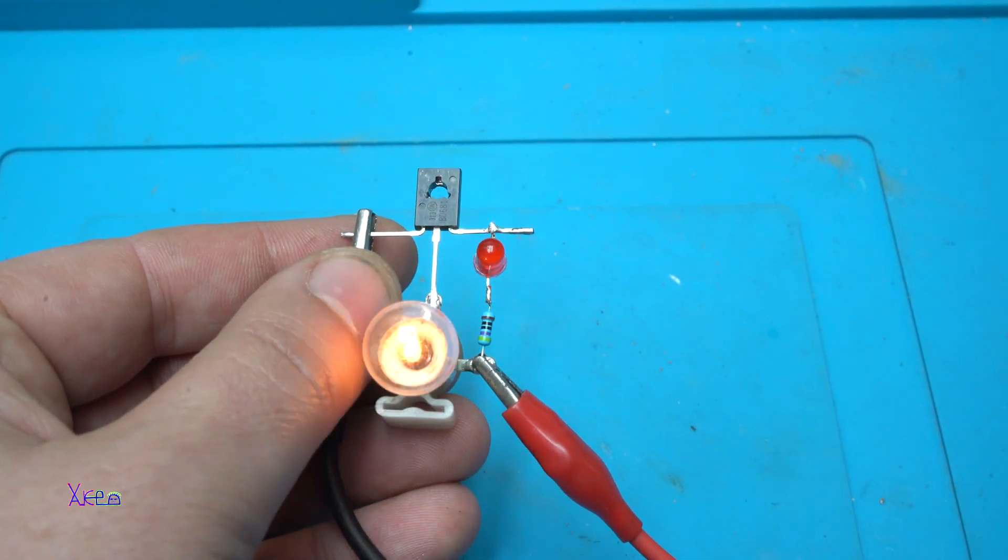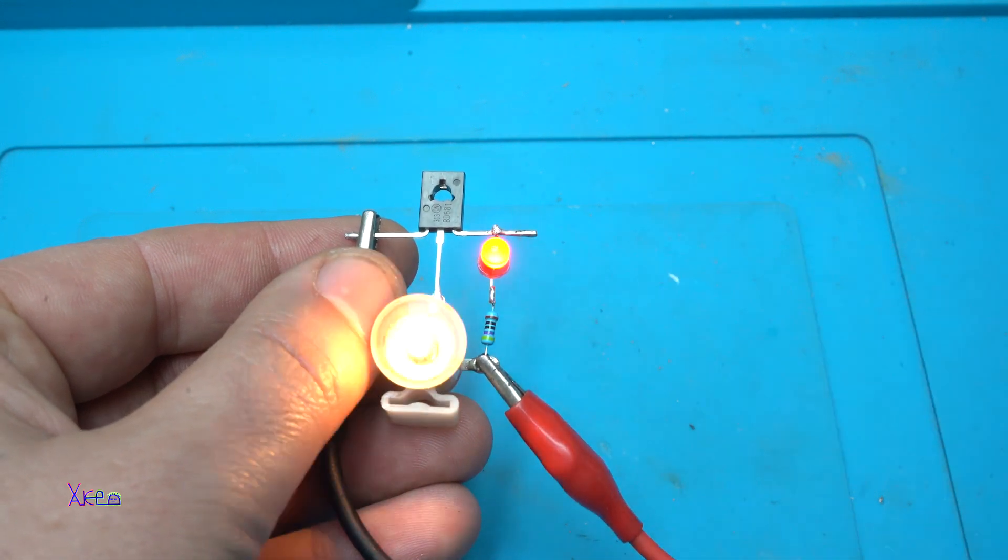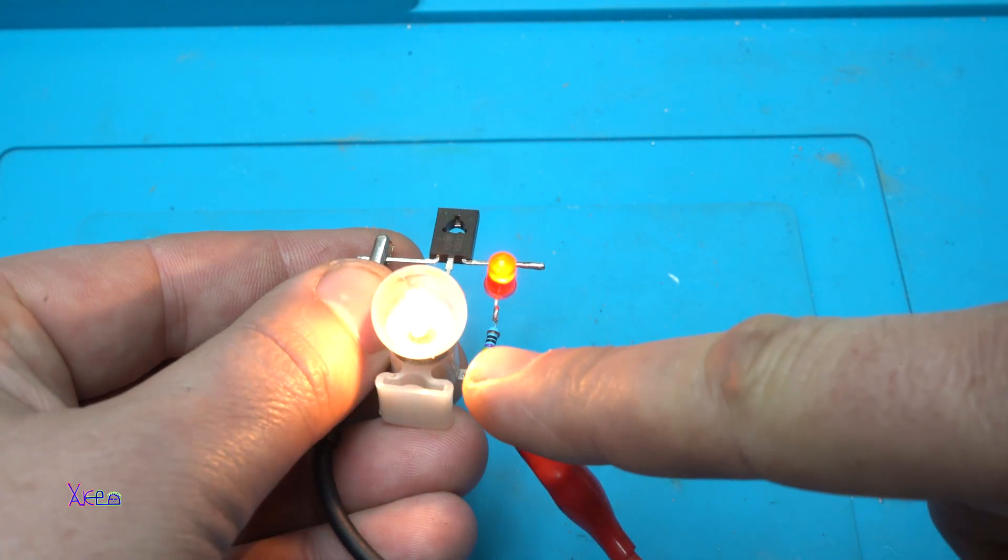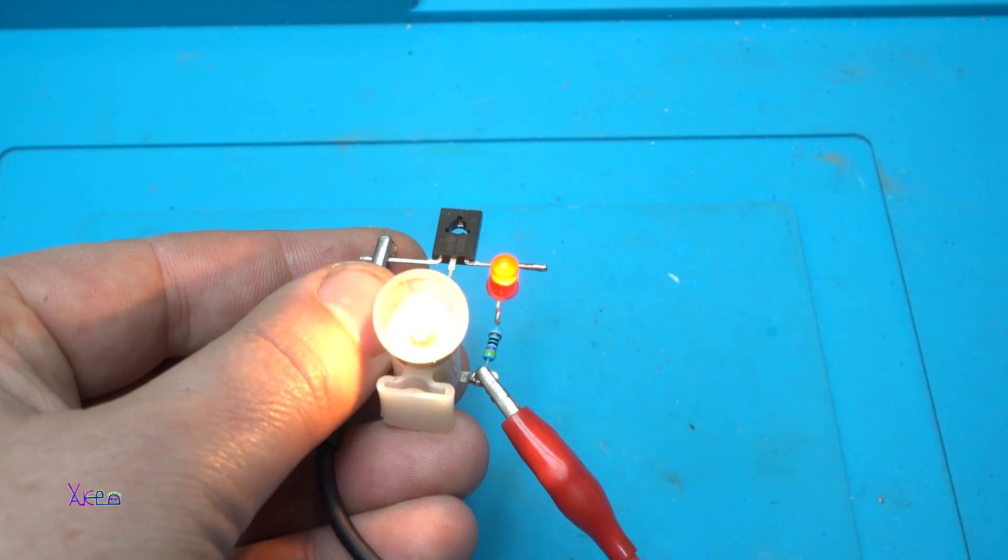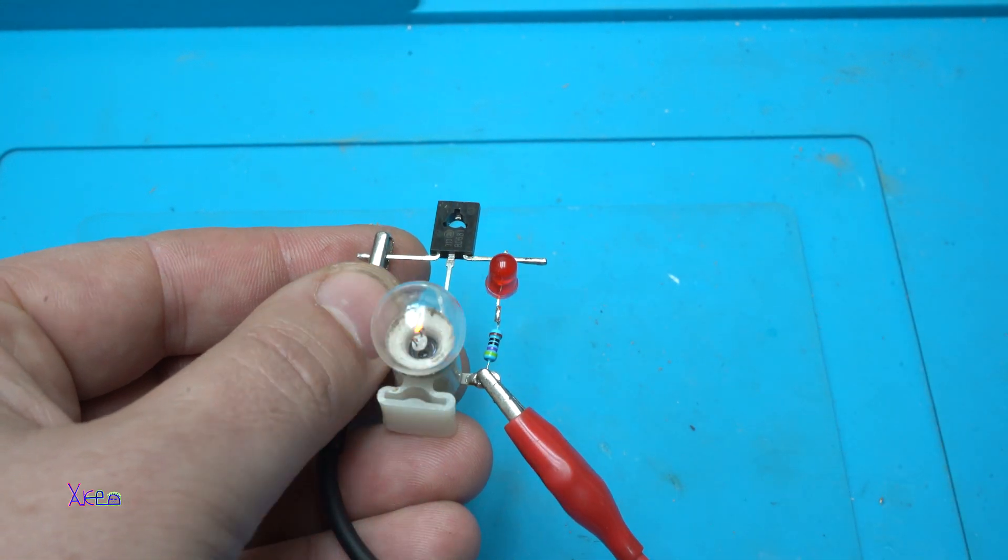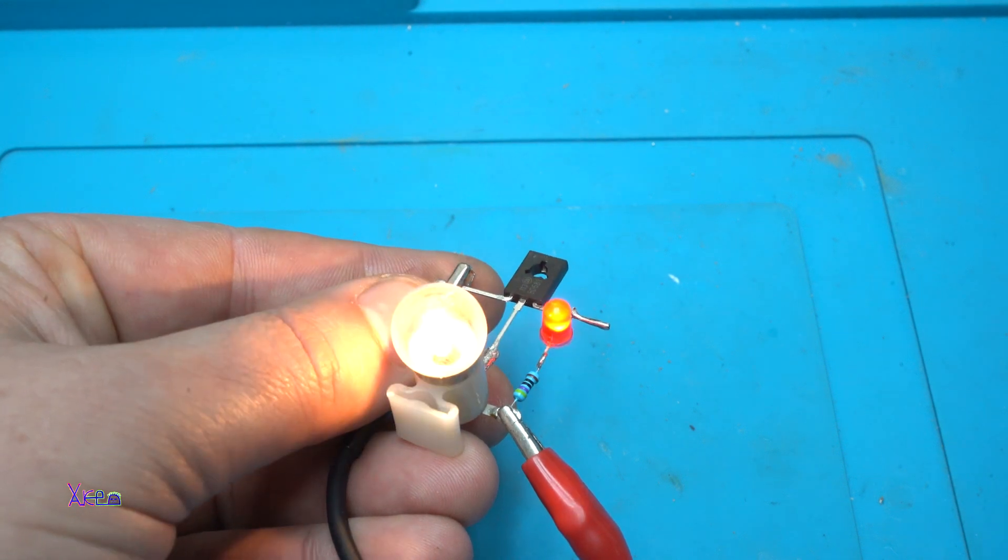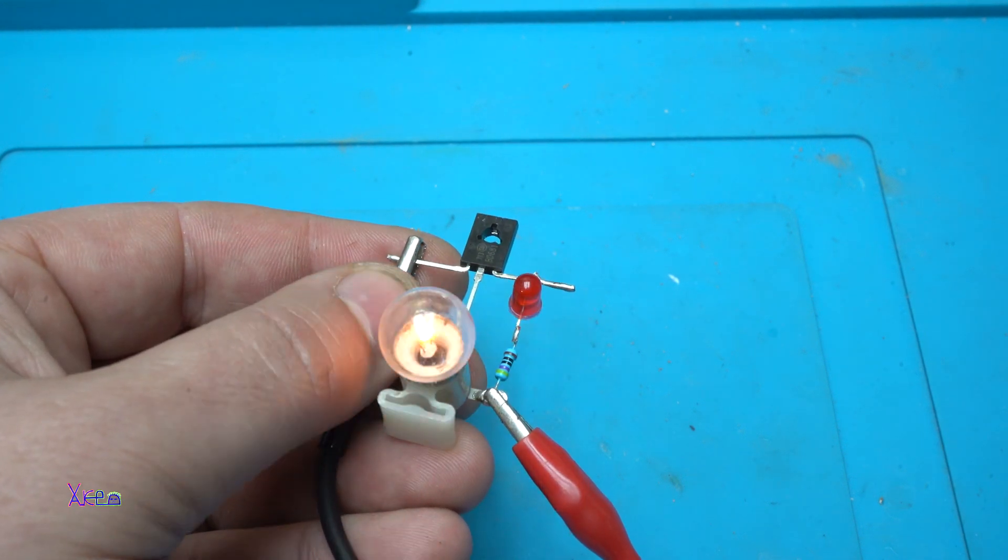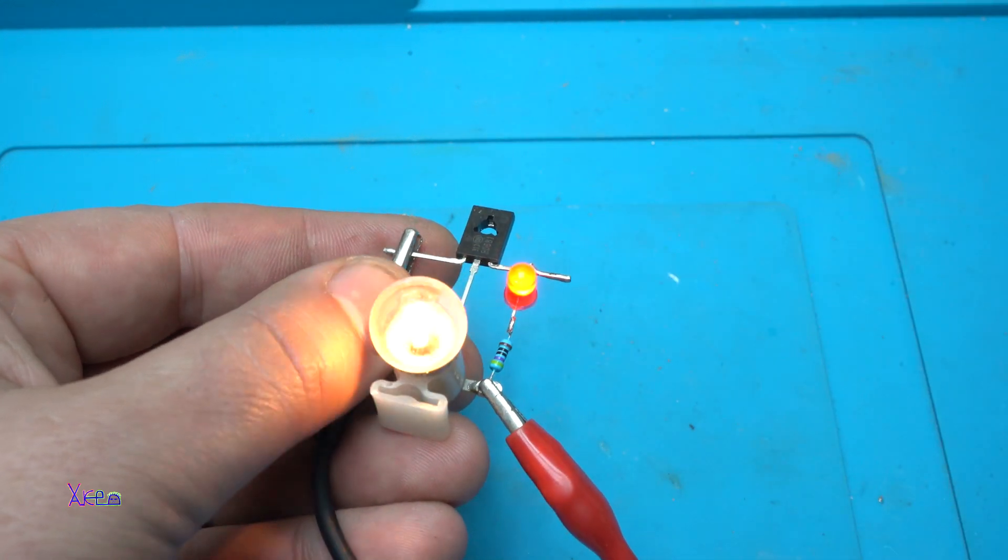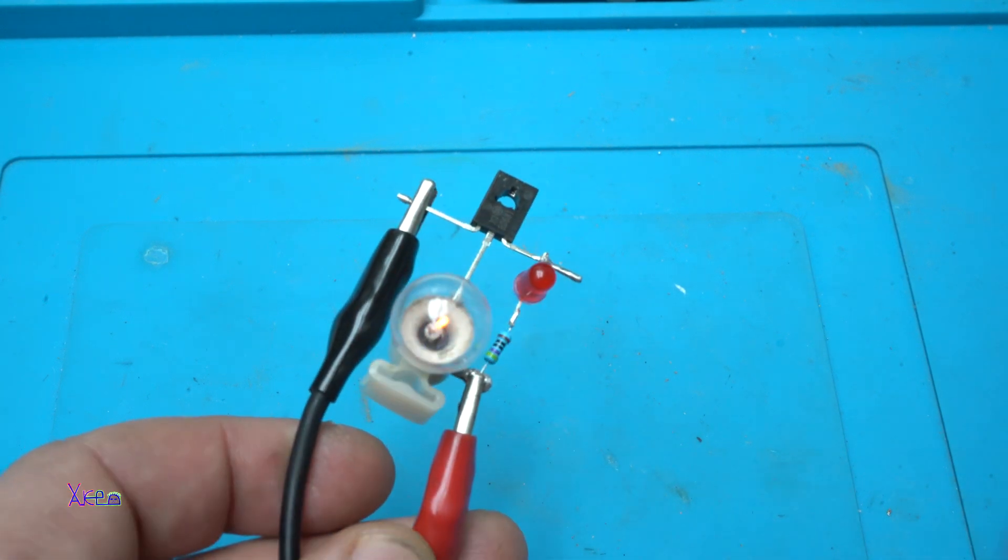Take a look at the simplicity of this circuit. Using one blinking LED, we make it flash the light bulb using a transistor. This is cool and I like it because it's simple. Three components only: one, two, three, to blink the light bulb.